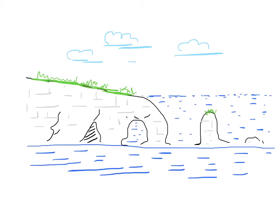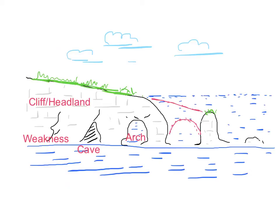We can look at these processes together as a cycle affecting cliffs, particularly those in headlands. The diagram here is a cross-section of a headland. First, we have the cliffs and the headland sticking out from the mainland. A weakness in the cliff is gradually eroded more than the surrounding rock to form a cave. Over time, waves bashing into the cave break through to the other side of the headland, leaving behind a feature called an arch. As erosion continues and enlarges the arch, the top collapses into the sea, leaving behind an isolated pillar of rock called a stack.